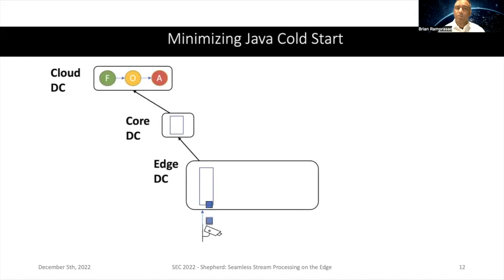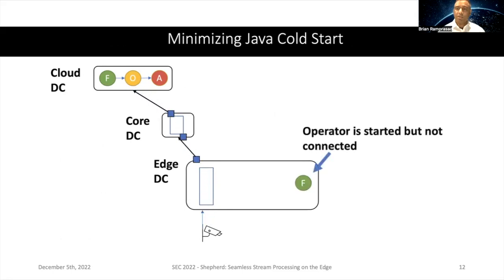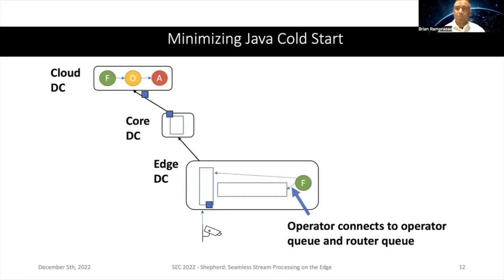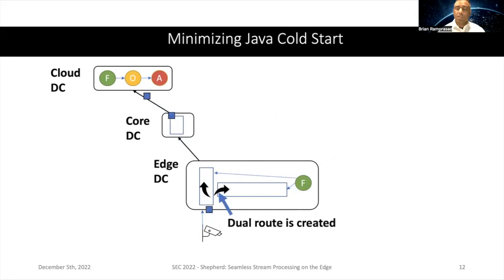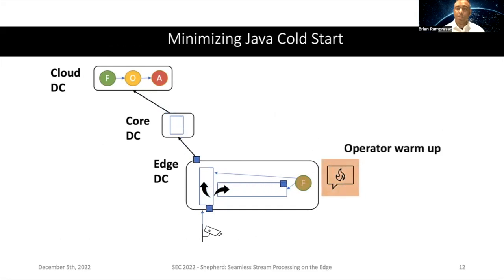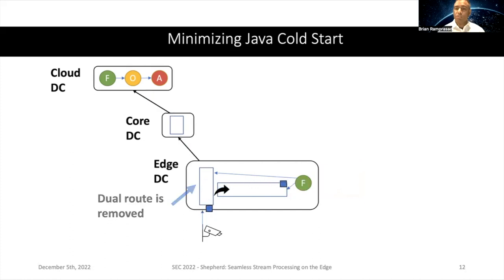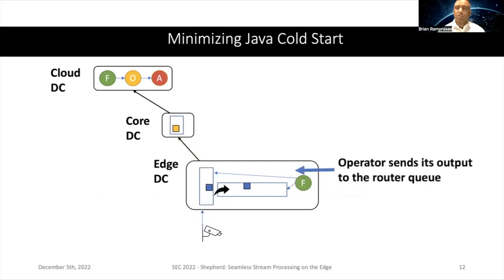To minimize Java cold start, we use a dual route approach. Tuples flow through the router queue to the cloud while we start the filter operator and add its queue. The dual route sends a sample of the data stream to the filter operator to warm it up, while still sending data to the cloud so we make progress on the stream. Only once the filter operator is warmed up do we remove the dual route and route data exclusively through the edge filter operator. This means the operator is not joining the data stream cold — it's already warmed up and can process data as quickly as an operator that had been running previously, giving us a more seamless transition.